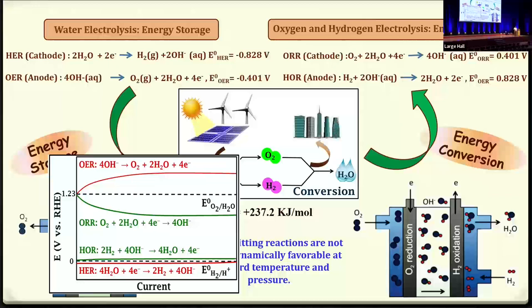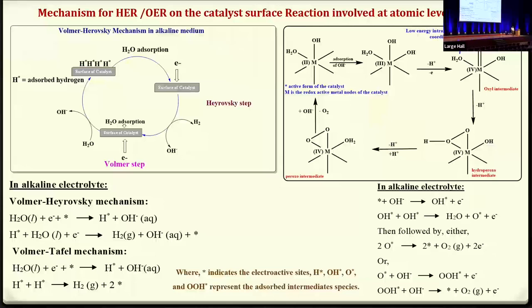The catalysts generally used are noble metals like platinum and ruthenium. These metals coordinate with the water molecule and facilitate the water splitting. I am putting the mechanisms here for oxygen evolution reaction and hydrogen evolution reaction. The problem is that the noble metals being used are expensive and practically not viable.